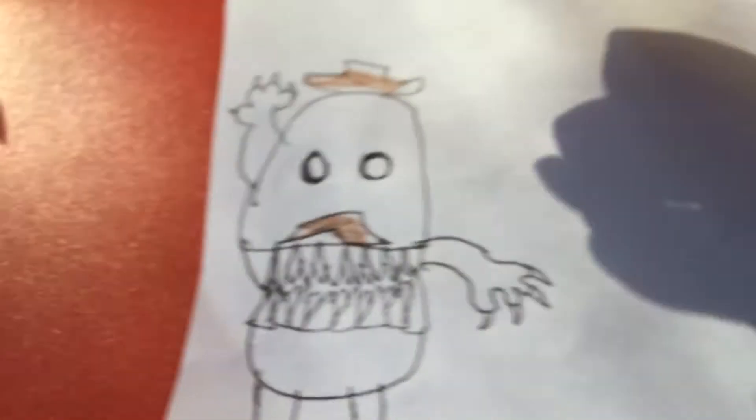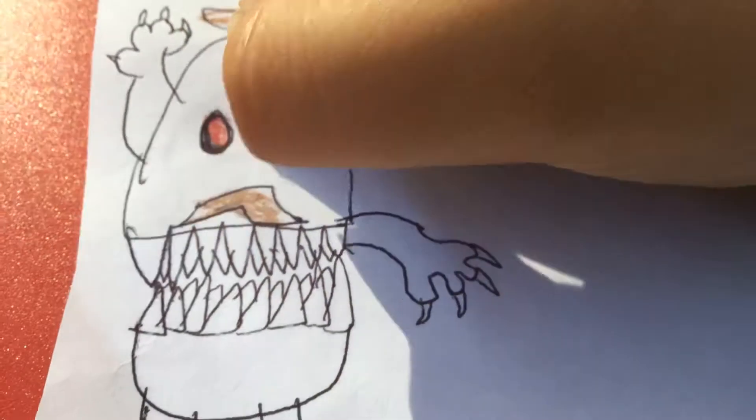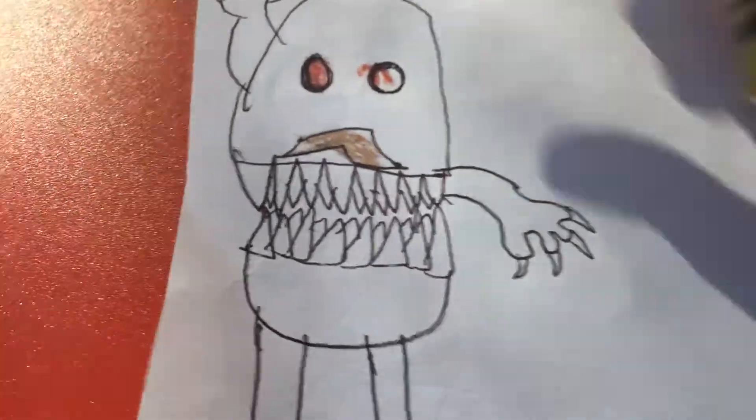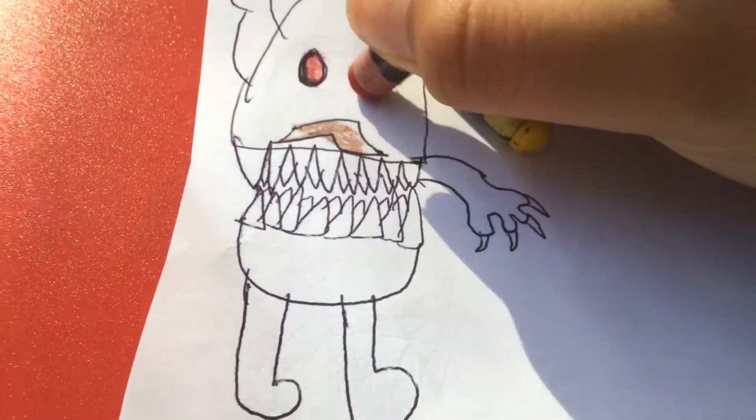Now, get a red crayon. Color in red eyes. Supposed to look like somebody creepy. Looks like he's a monster potato. Okay, I need to color a lot in the red.